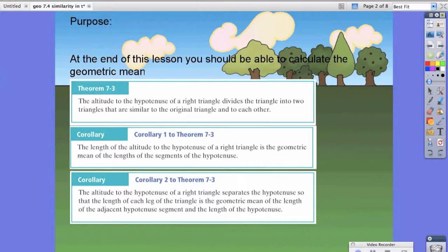Corollary 2 states that the altitude to the hypotenuse of a right triangle separates the hypotenuse so that the length of each leg of the triangle is the geometric mean of the length of the adjacent hypotenuse segment and the length of the hypotenuse. I know that sounds like a lot of words, but we're going to break that down in the next slide.